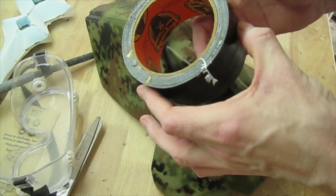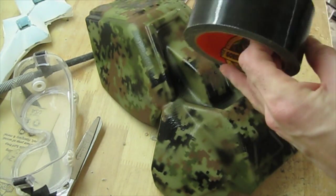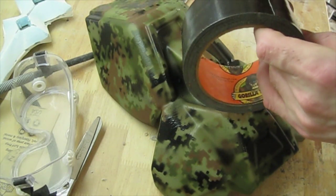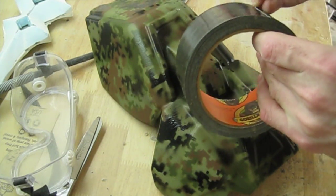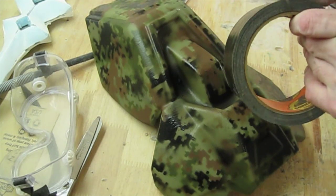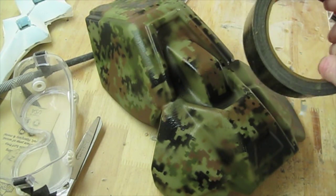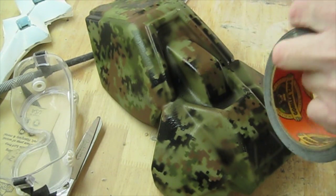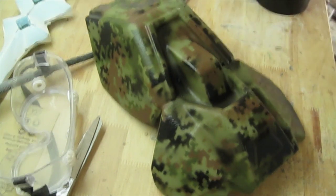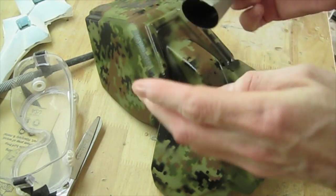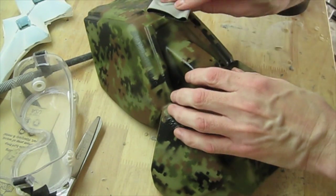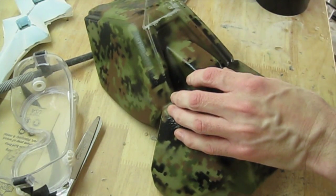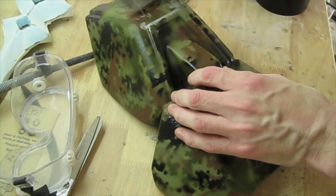I actually use Gorilla Tape, which has got a bit of a stronger adhesive than duct tape. And really all you do is, let's see, I generally just make a little loop. And then start going through and pull it off.